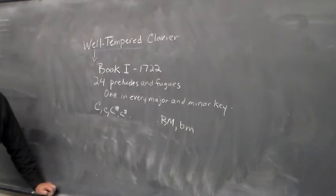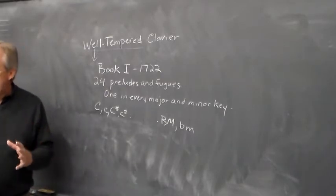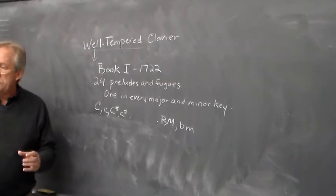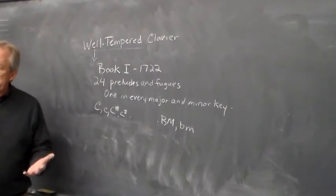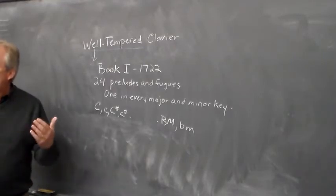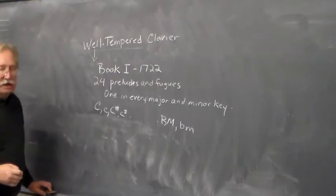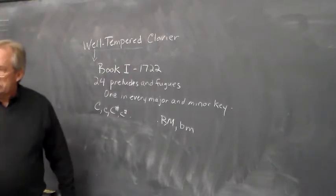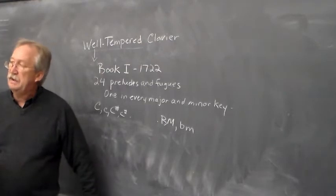One thing that was popular in the Baroque was to, as you remember, what the doctrine of affection is to basically have one mood, one character per movement. But then Baroque composers liked to couple together things that were opposite and contrasting. And so the prelude and the fugue are contrasting types of keyboard pieces. The fugue is one of the more structured types. It's a polyphonic work.